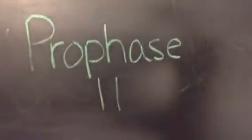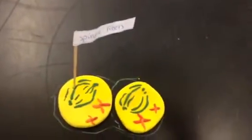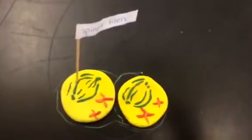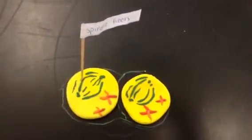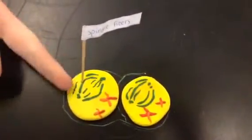This is prophase two. As the cell enters prophase two, their chromosomes, each consisting of two chromatids, become visible. And these are spindle fibers.